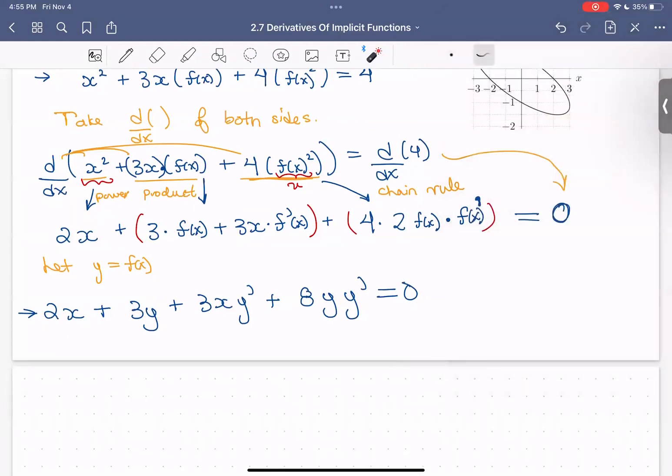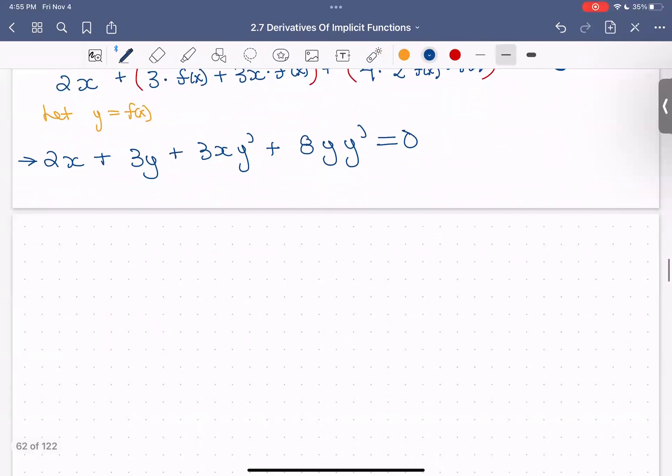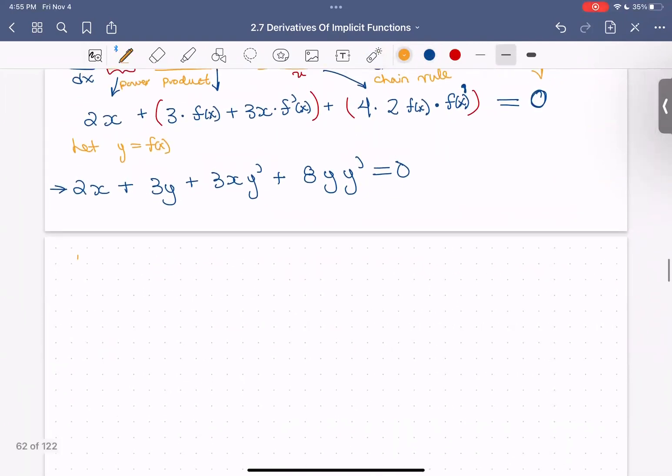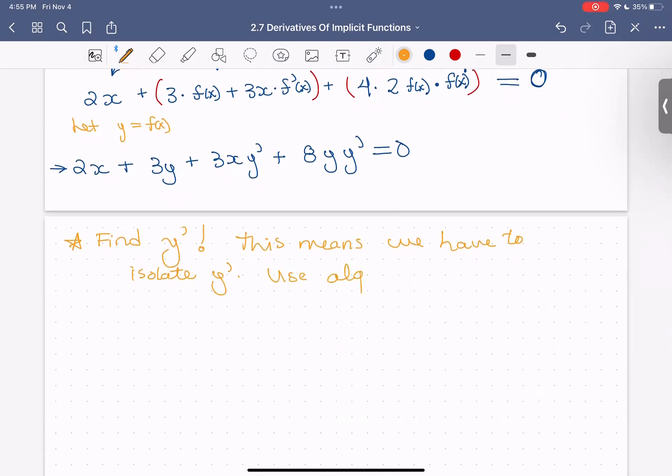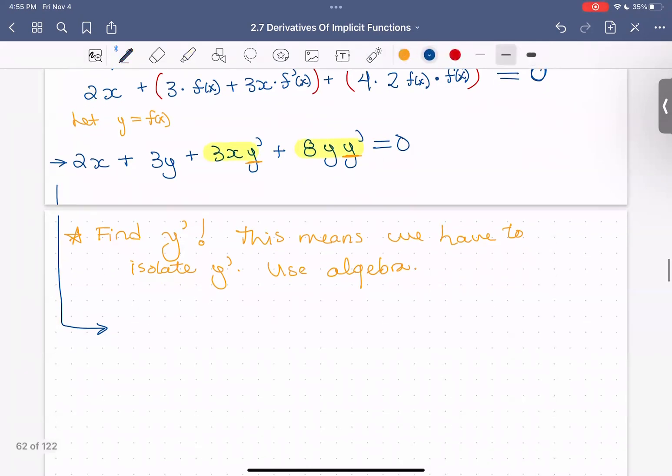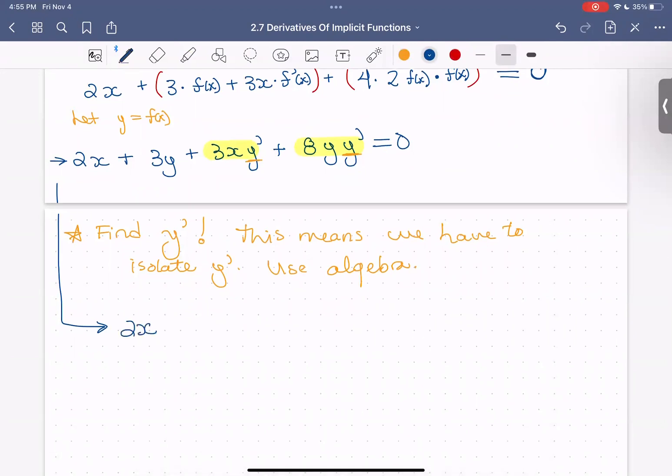I'm going to add an extra page so I have plenty of room here. So what's happening now? So now what we want to do is our goal is to find y prime. So this means we have to isolate or solve for y prime. So that means we're going to have to use some algebra. So let's go through the steps there. So again, I want to focus on y prime. So to do that, I see that there are two terms of y prime in it. So I'm going to go ahead and factor out y prime from each of those terms. So I have 2x plus 3y plus 3x plus 8y all times y prime equals 0.